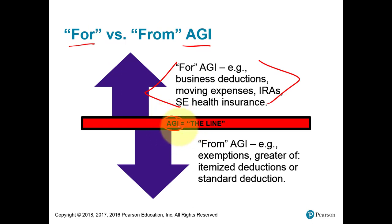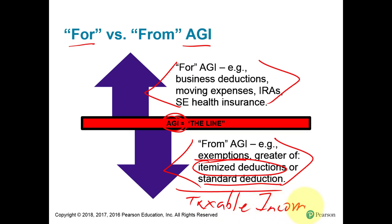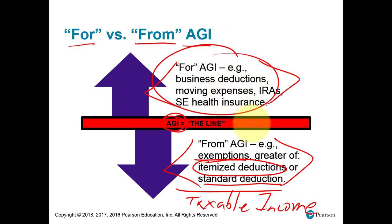On the back side of the 1040 we recopy the AGI at the top and then subtract out some more deductions, like exemptions and the standard deduction we learned back in chapter 2. Here in this chapter we're going to learn some itemized deductions. These are subtracted from the AGI number to eventually get taxable income that we look up on the tax table or use a tax rate schedule. These deductions are called from-AGI deductions.